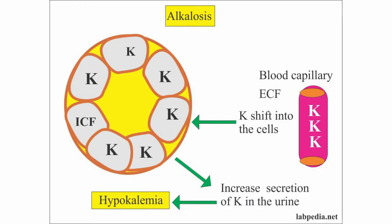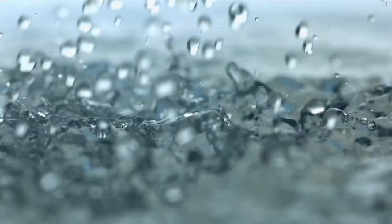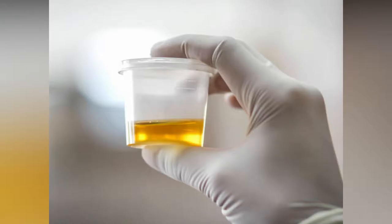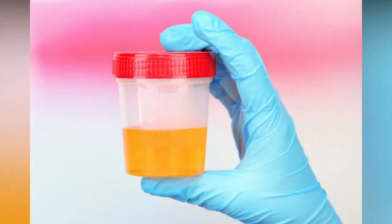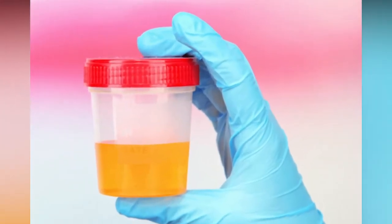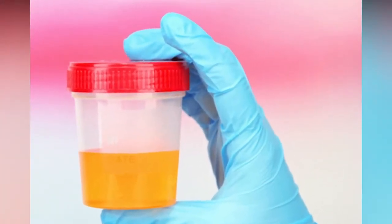Some of the elements that make up urine are potassium, water, sodium, uric acid, oxalate, phosphate, and calcium.